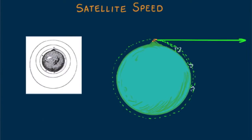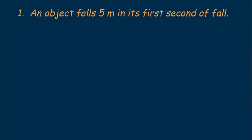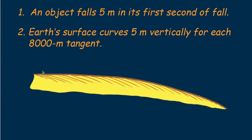Newton calculated what this speed would be and realized cannonballs could never be fired that fast — rocketry wasn't the order of the day, and he wasn't hip to multi-stage rockets, so Newton did not envision humans ever putting satellites in orbit. You can calculate that speed in your head. Two things to know: an object falling beneath a straight-line path falls 5 meters in its first second of fall, and Earth's surface drops 5 meters for every 8,000 meters tangent to its surface.